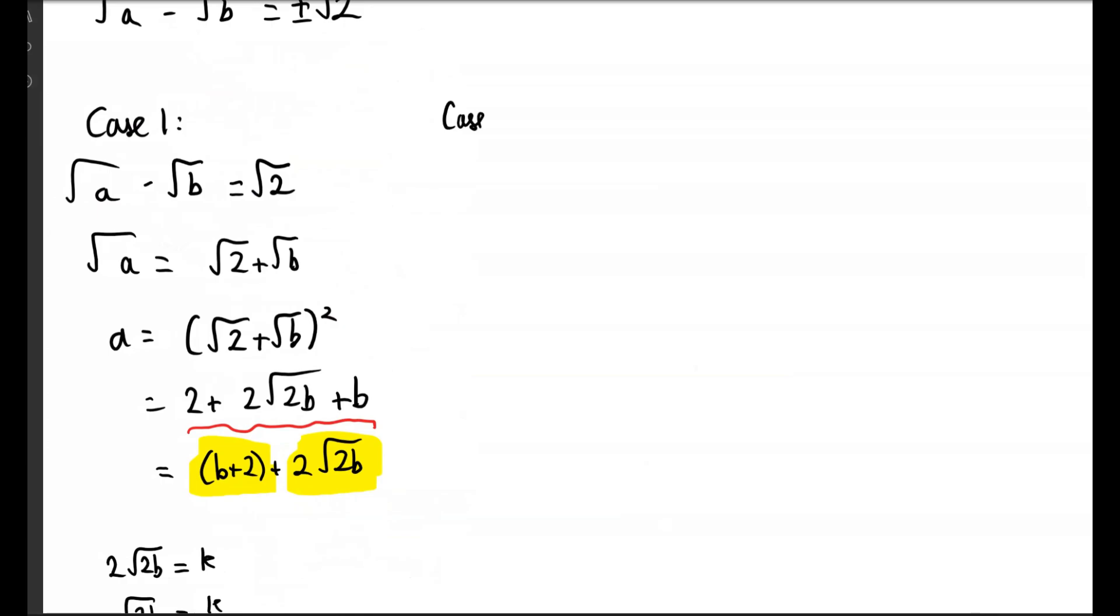Now we consider case 2, which is √a - √b = -√2. If we multiply both sides by -1, we get √b - √a = √2. And as we can see, this is very similar to case 1, just that b and a are swapped.